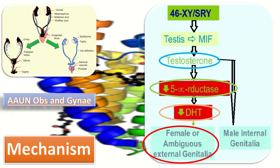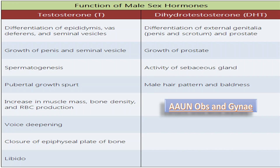Testosterone is responsible for the formation of male internal genitalia. The main role of dihydrotestosterone is differentiation of male external genitalia. Early on in fetal life, male and female sex organs and external genitalia are undifferentiated, and testosterone and dihydrotestosterone play a role here.